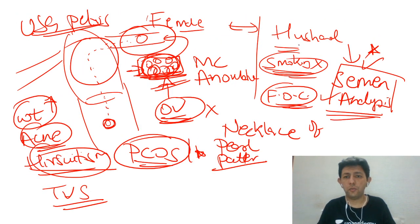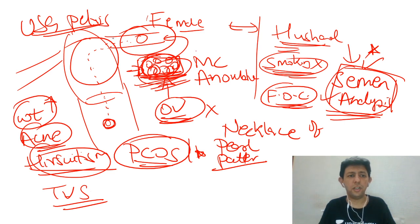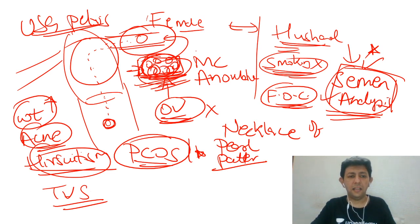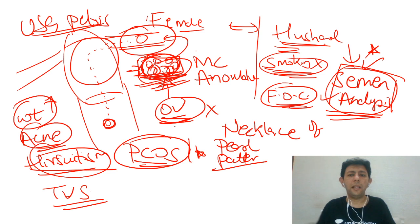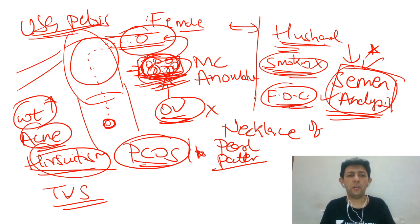To summarize: for the husband, semen analysis is done. For the female, blood investigations include TSH, prolactin, blood sugar, and hemoglobin; FSH and AMH for ovarian function; TVS pelvis for ovarian and uterine evaluation; and HSG for fallopian tube patency. Treating thyroid and prolactin disorders can correct ovulatory disturbance. This complete workup gives a full overview of investigations for the infertile couple.